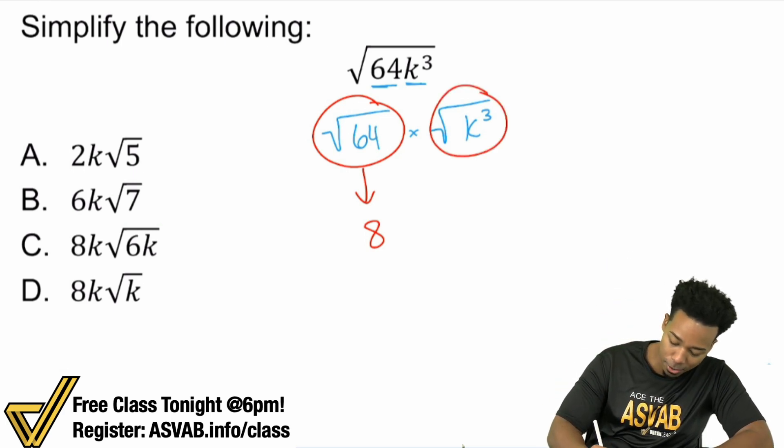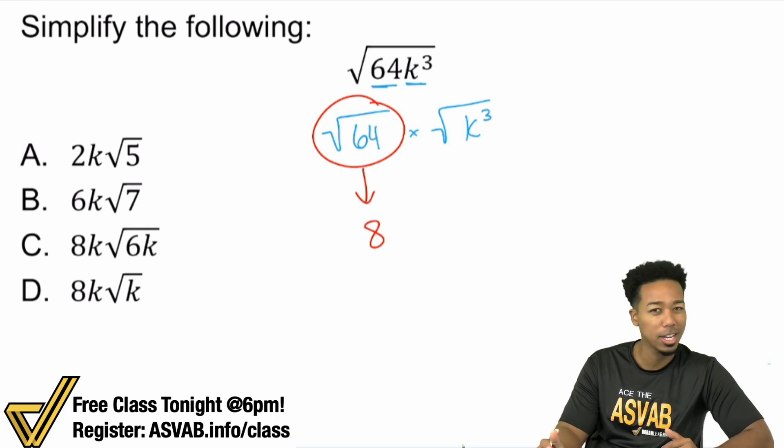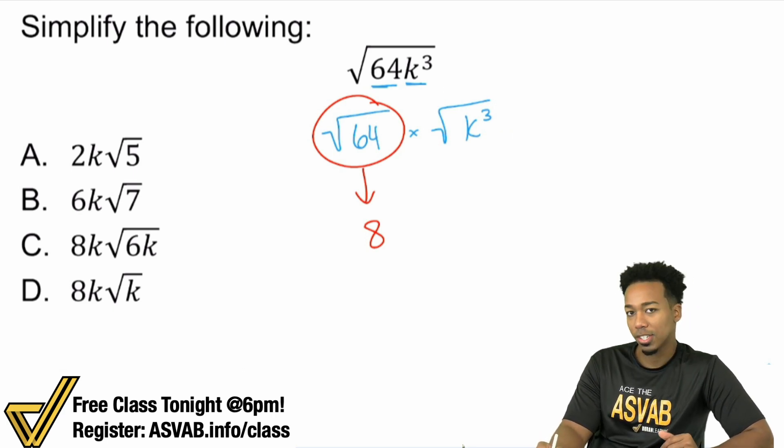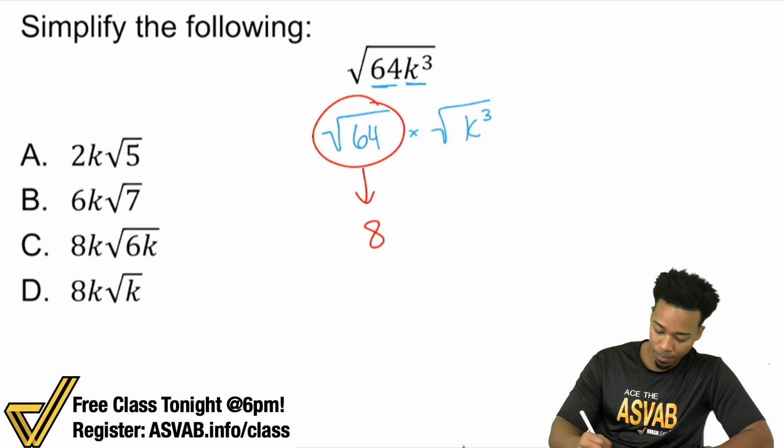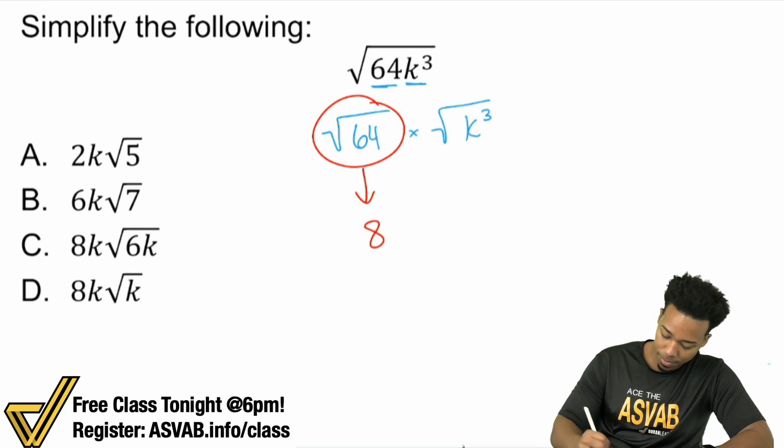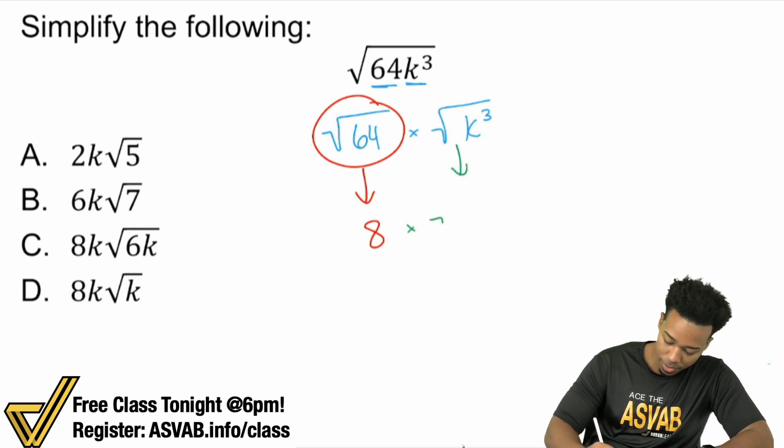So when I take a look at k³, there's something really peculiar that I've noticed. There's no number that I can multiply by itself to get k³. However, I can take a look at k³ like the square root of k² times k.